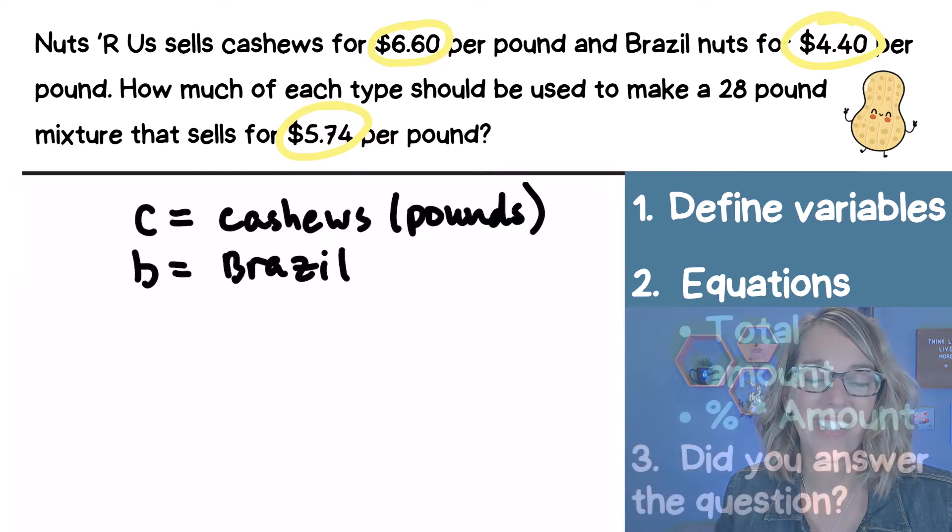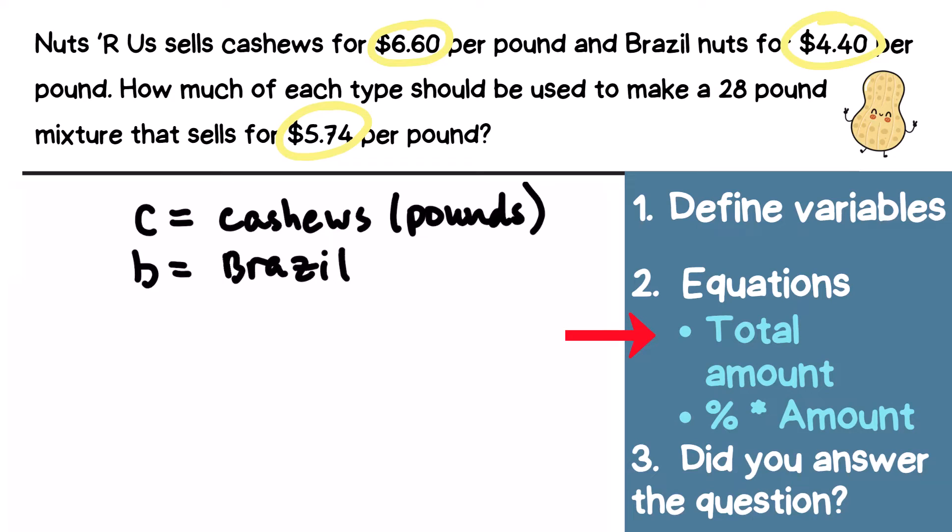I also want those equations including that first one, which is the total amount. So C, the cashews, plus the Brazil nuts are going to add up to a total amount of 28 pounds. So 28 is that total that we get.